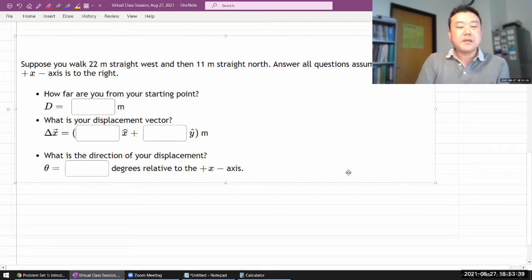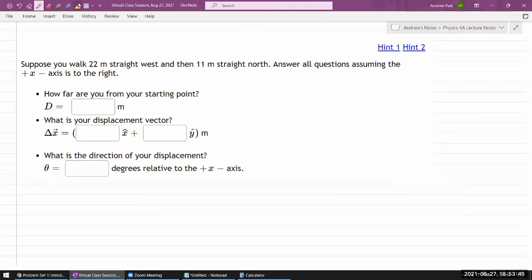So it asks suppose you walk. Let me start doodling with the start. I guess because it's talking about west and north, and it's talking about some kind of axis to the right. I'm going to assume, because this is quite a bit of a common convention, I'm going to assume this is how our axis should be, that up should be north.